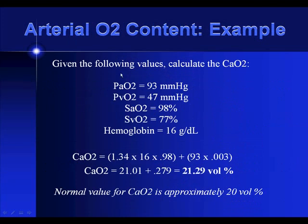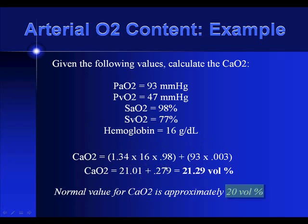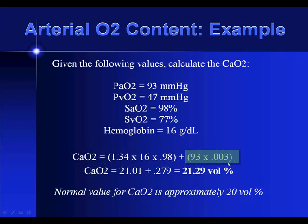Let's calculate arterial oxygen content with these variables: PaO2 of 93, venous O2 of 47, arterial saturation of 98%, venous saturation of 77%, and hemoglobin of 16. Since we're solving for arterial O2 content, we use the arterial numbers: 0.98 and 93. When you calculate it out, you'll see the normal arterial oxygen content is around 20. Note that on an exam, they may ask for just the portion that's carried by hemoglobin or the portion that's dissolved, so pay close attention to the question.